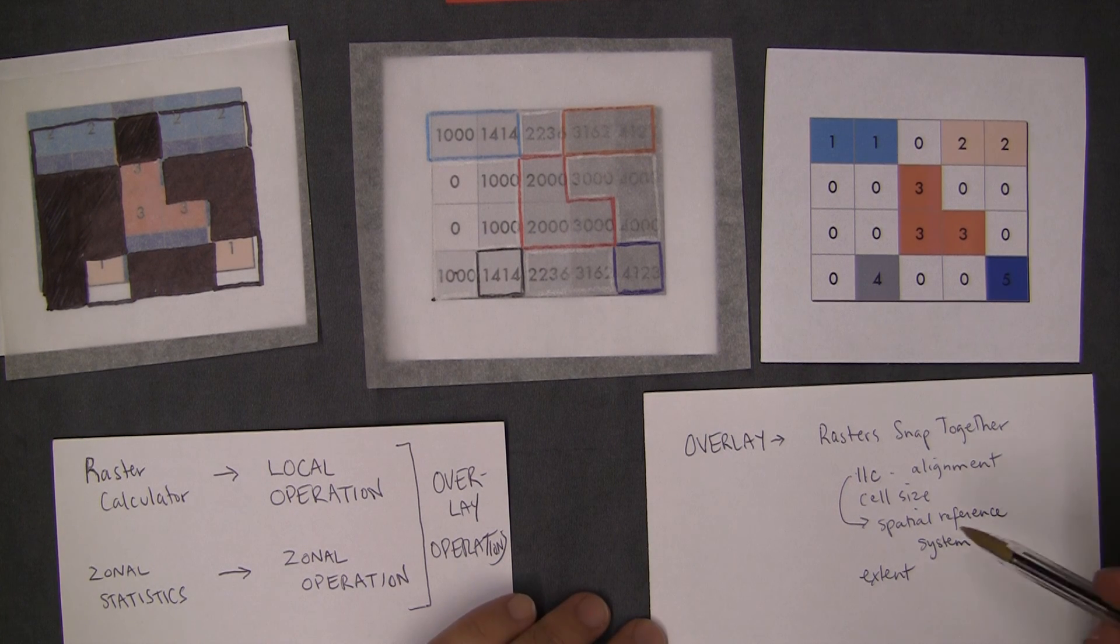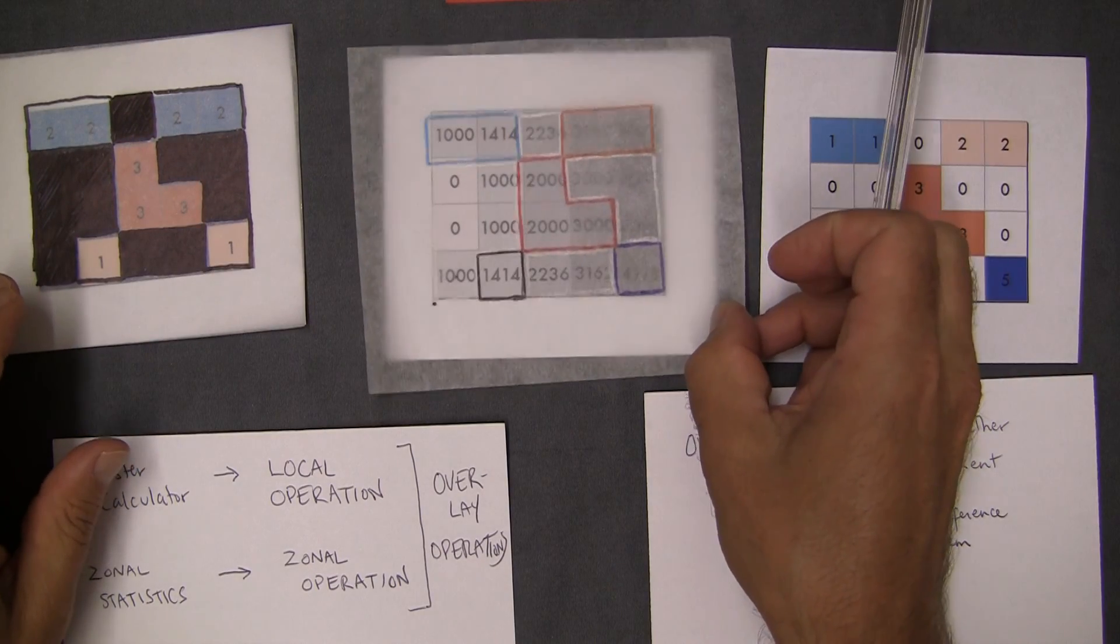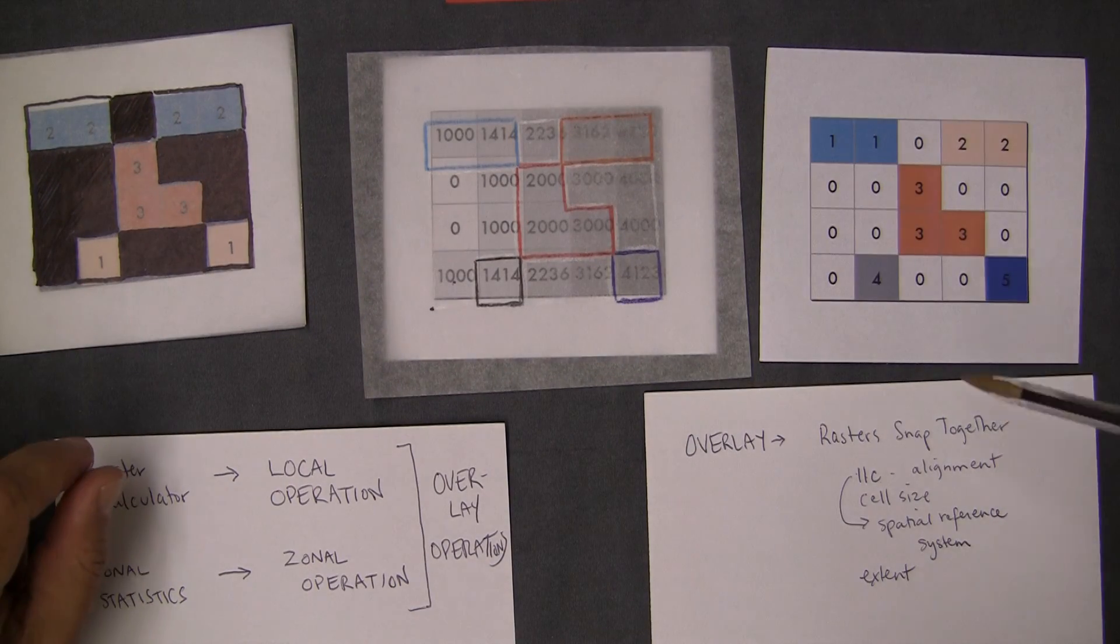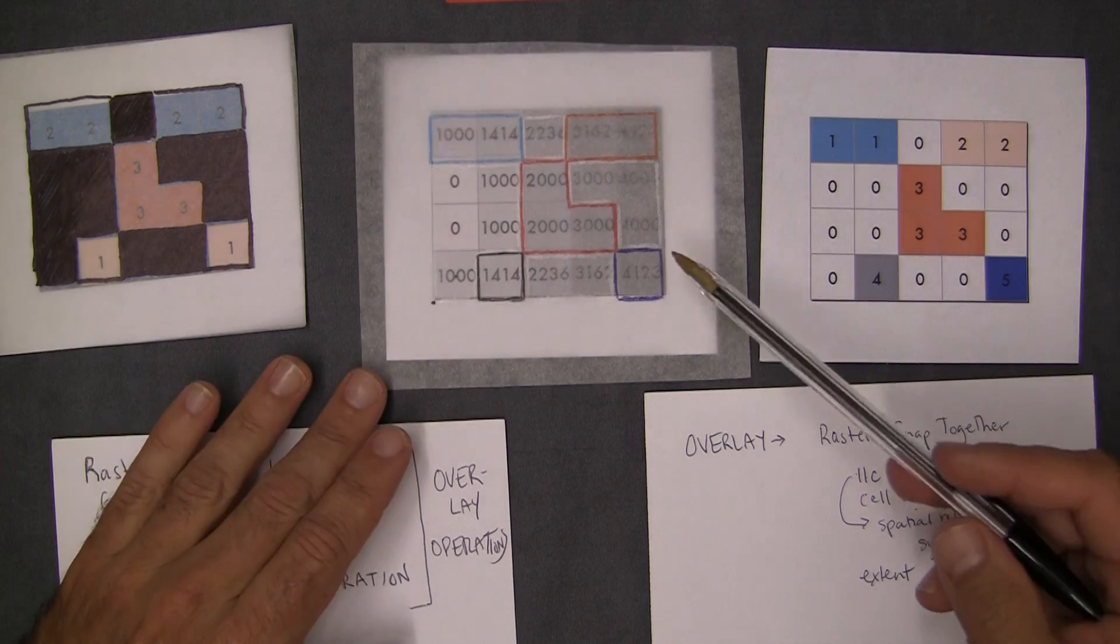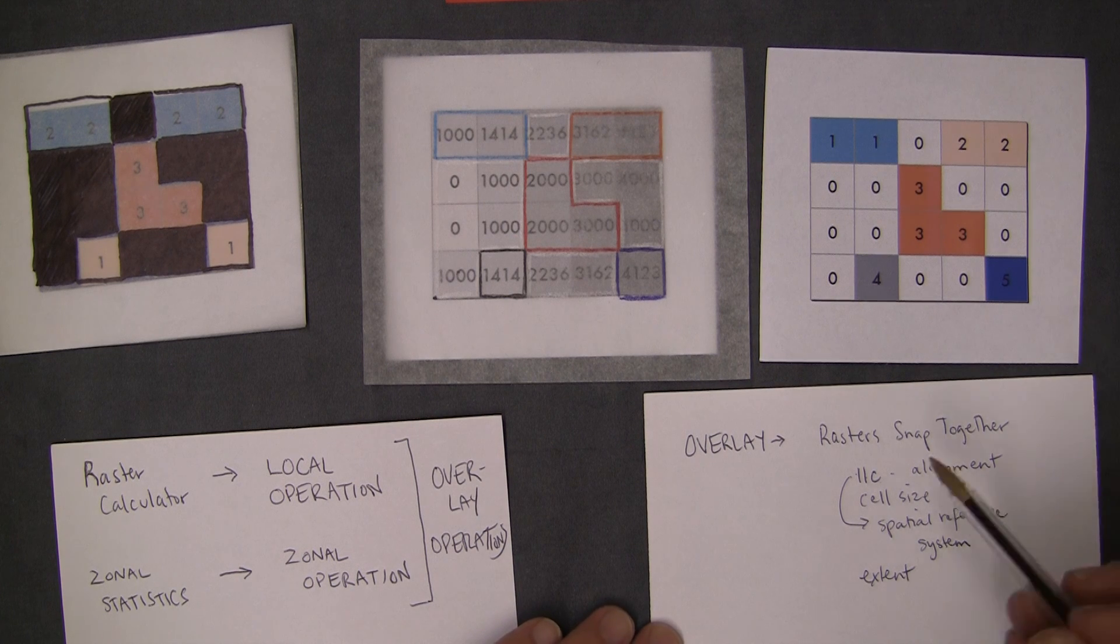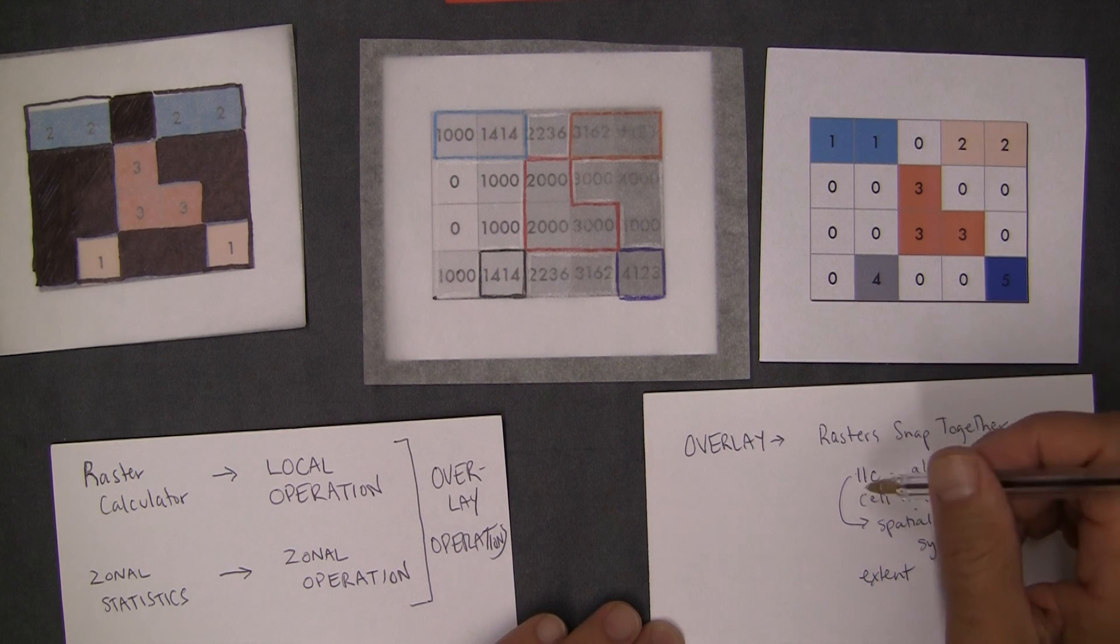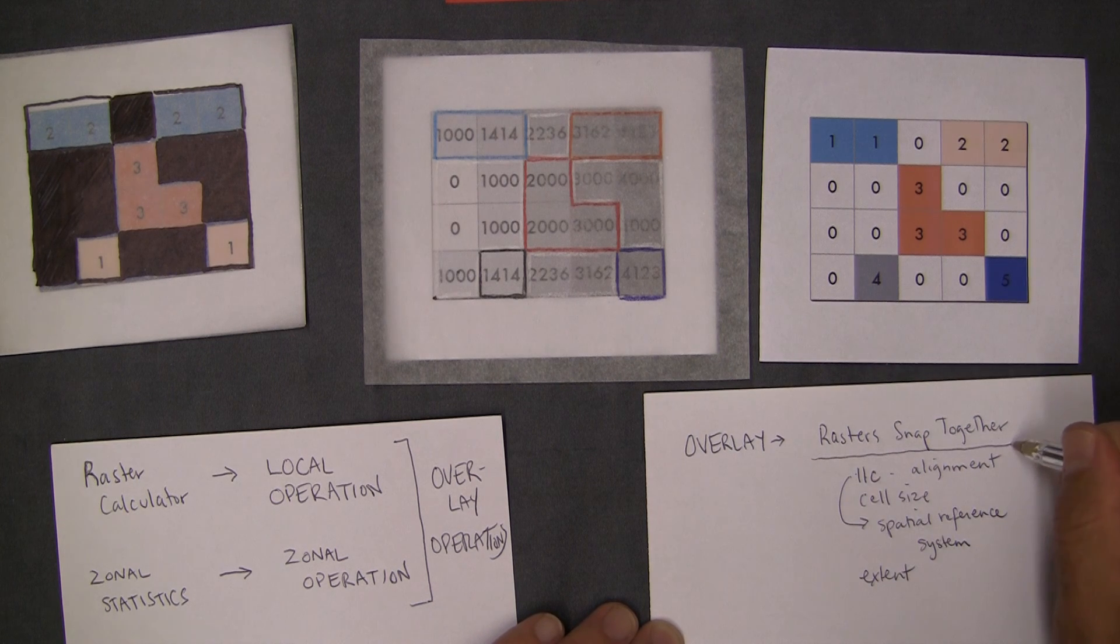Fair enough. So what we'd like to do is come up with a way that whenever we do an overlay analysis, or even whenever we kind of generate a new raster that we're going to use in some kind of overlay analysis, that we ensure that the rasters snap together.